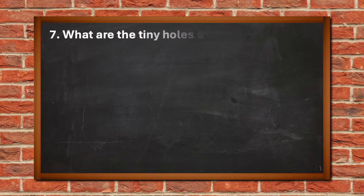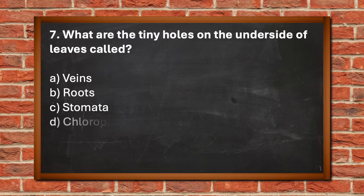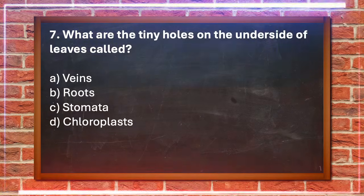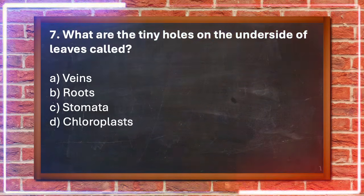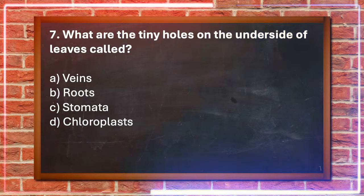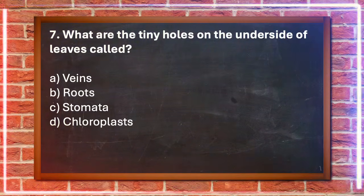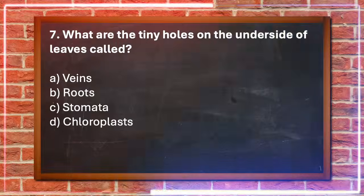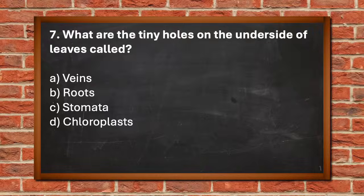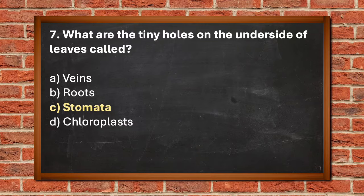Number 7. What are the tiny holes on the underside of leaves called? A. Veins, B. Roots, C. Stomata, D. Chloroplast. The answer is C. Stomata.